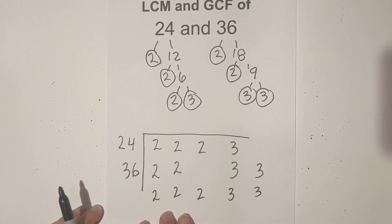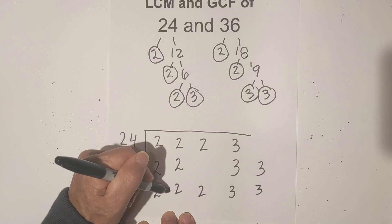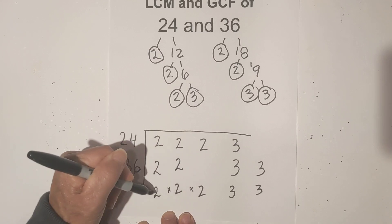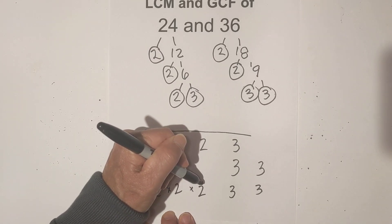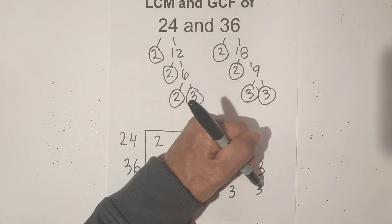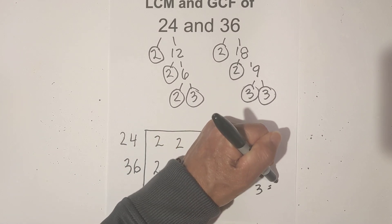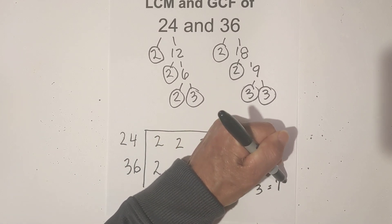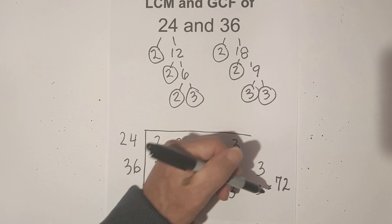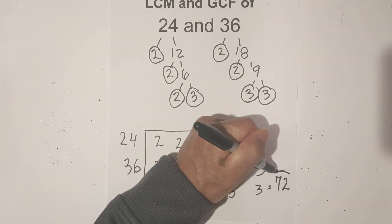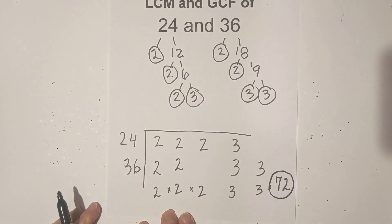So here is what we have. All you do is multiply these. So you have 2 times 2 is 4, 4 times 2 is 8, 8 times 3 is 24, and then 24 times 3 is 72. So that is your lowest common multiple.